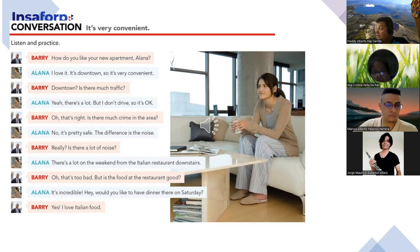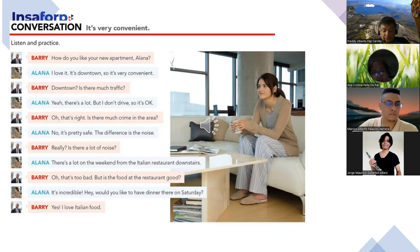Page 53, Exercise 8. Conversation: 'It's very convenient.' Listen and practice. How do you like your new apartment, Alana? I love it. It's downtown, so it's very convenient. Downtown? Is there much traffic? Yeah, there's a lot. But I don't drive, so it's okay. Oh, that's right. Is there much crime in the area? No, it's pretty safe. The difference is the noise. Really? Is there a lot of noise? There's a lot on the weekend from the Italian restaurant downstairs. Oh, that's too bad. But is the food at the restaurant good? It's incredible. Hey, would you like to have dinner there on Saturday? Yes, I love Italian food.